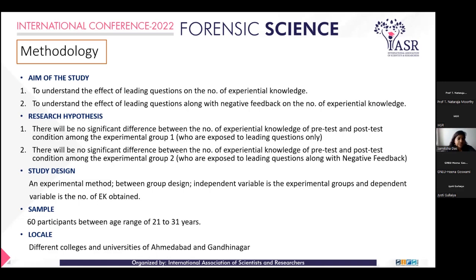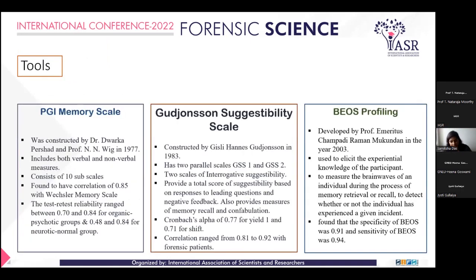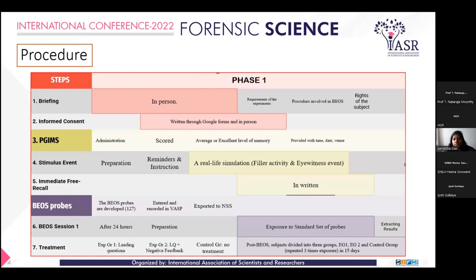The research hypothesis stated there would be no significant difference between the number of EK in pre-test and post-test among both experimental group one and experimental group two. An experimental between-group design was used. Sixty participants within the age group of 21 to 31 were taken from colleges and universities in Ahmedabad and Gandhinagar. PGIMS was used to assess memory level, and the Gudjonsson Suggestibility Scale 2 (GSS2) was used to find the authenticity of eyewitness recall. BIOS profiling measures EK — experiential knowledge — of an event.